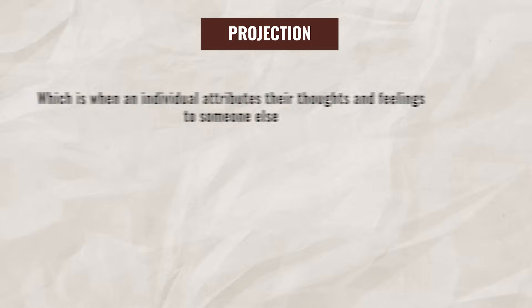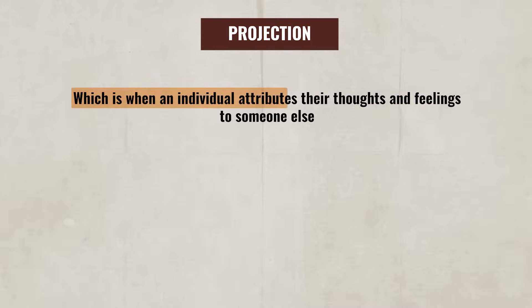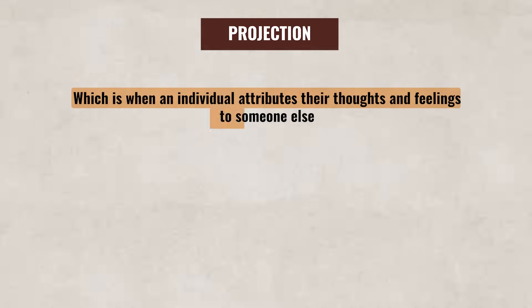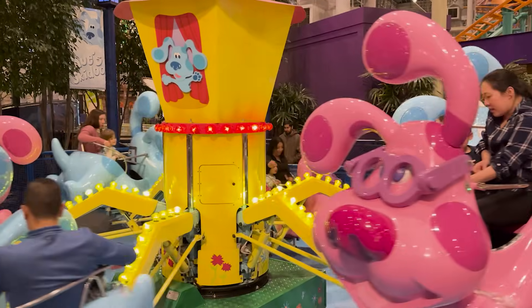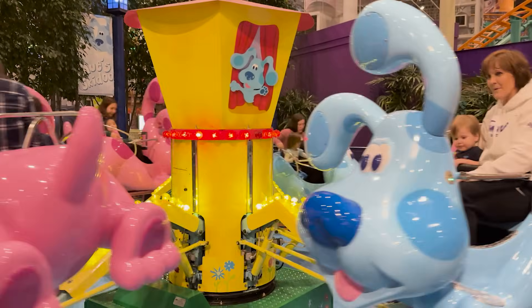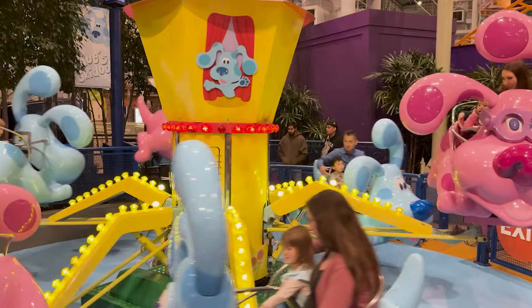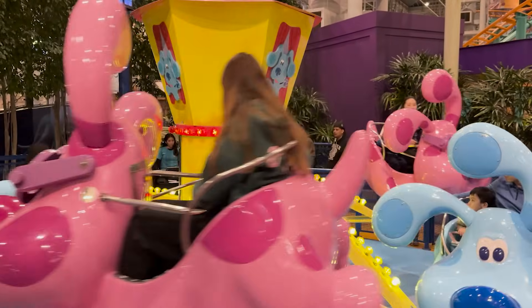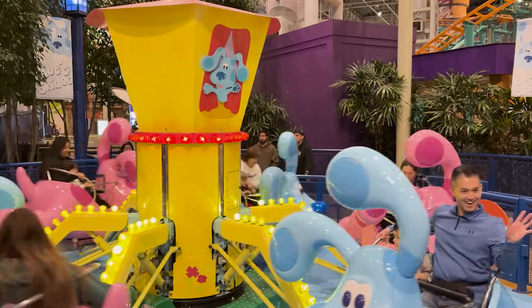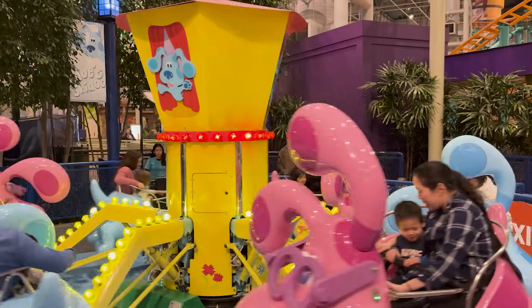Then there is projection, which is when an individual attributes their thoughts and feelings to someone else. For example, my friend is afraid of roller coasters and pretty much any other ride. The other day we were at the Mall of America with our kids, and the kids wanted to go on a ride called Blue Skidoo. Even though the ride simply moves in a slow circle, my friend kept anxiously asking his daughter, 'Are you okay, are you scared, is this too much, do you want me to try to stop the ride?' Meanwhile, his daughter was laughing and having the time of her life.